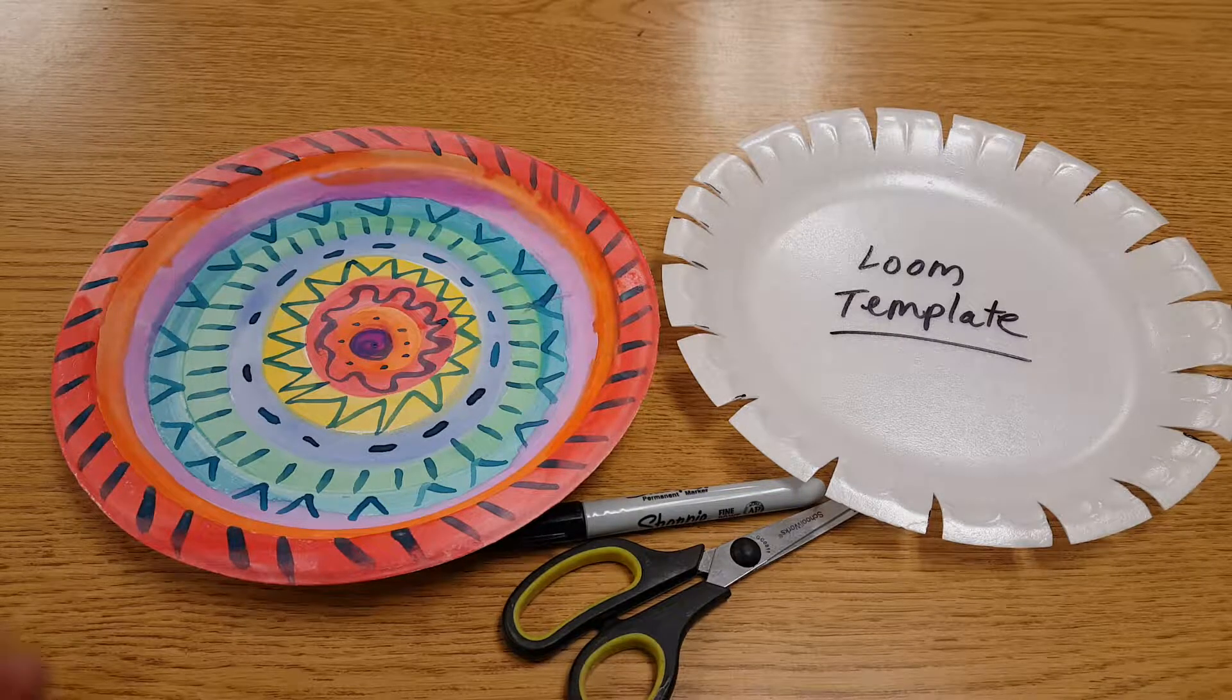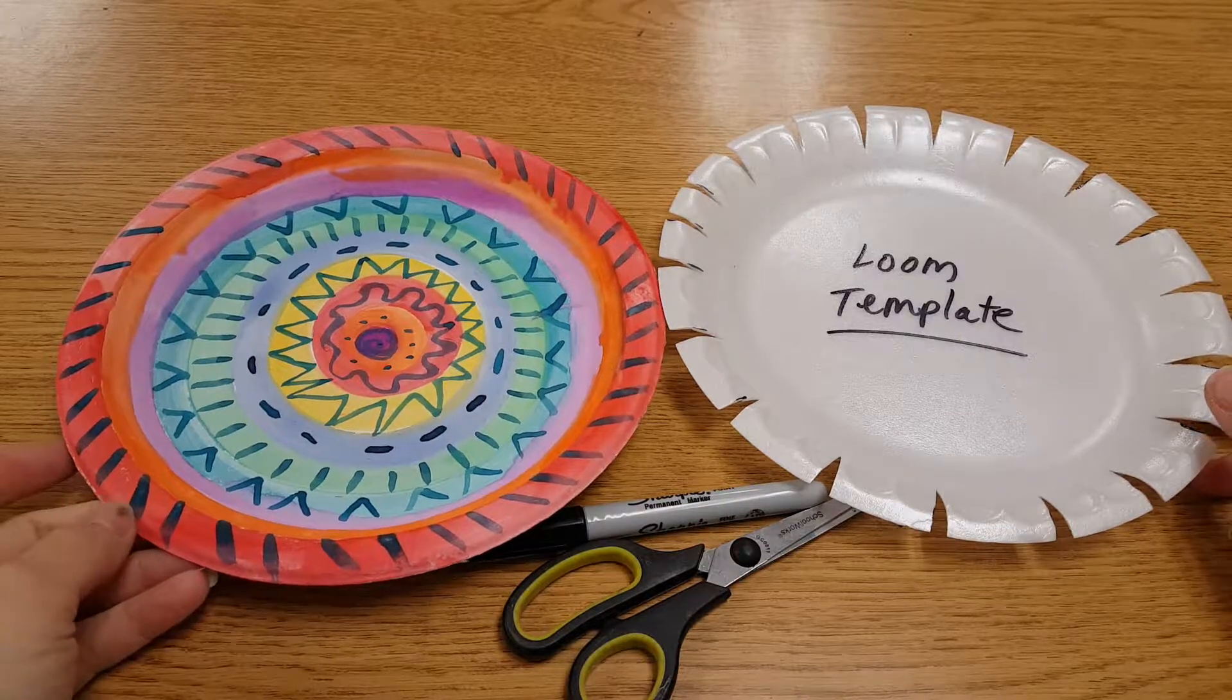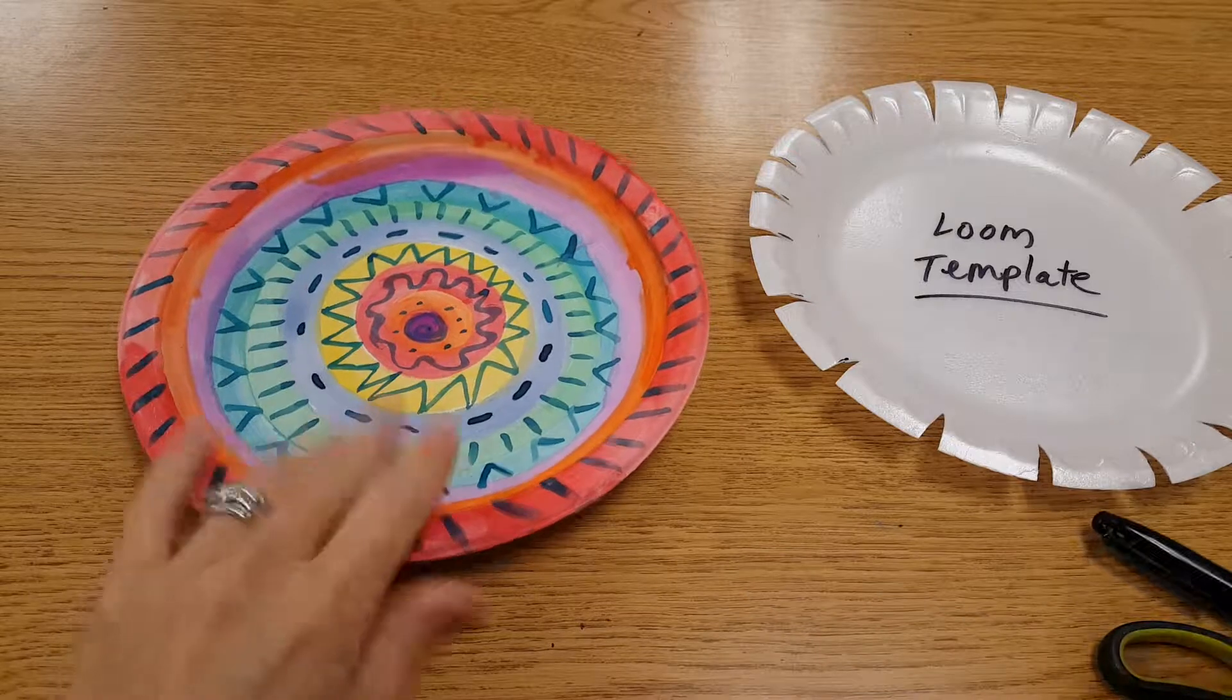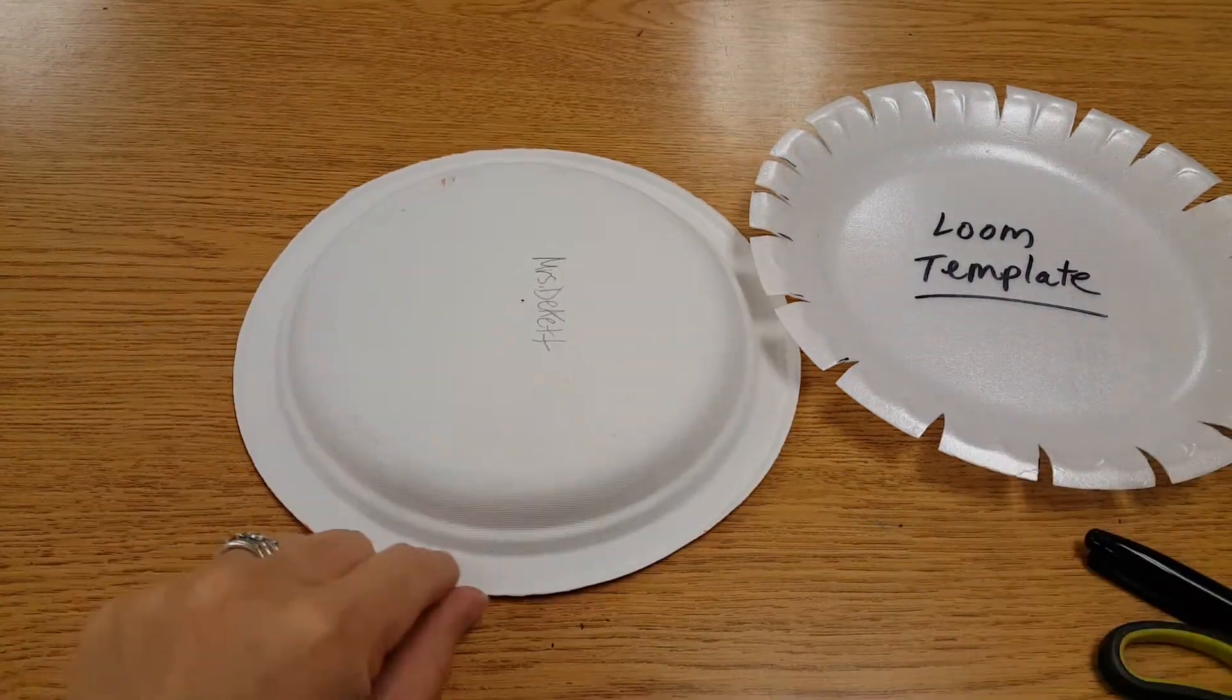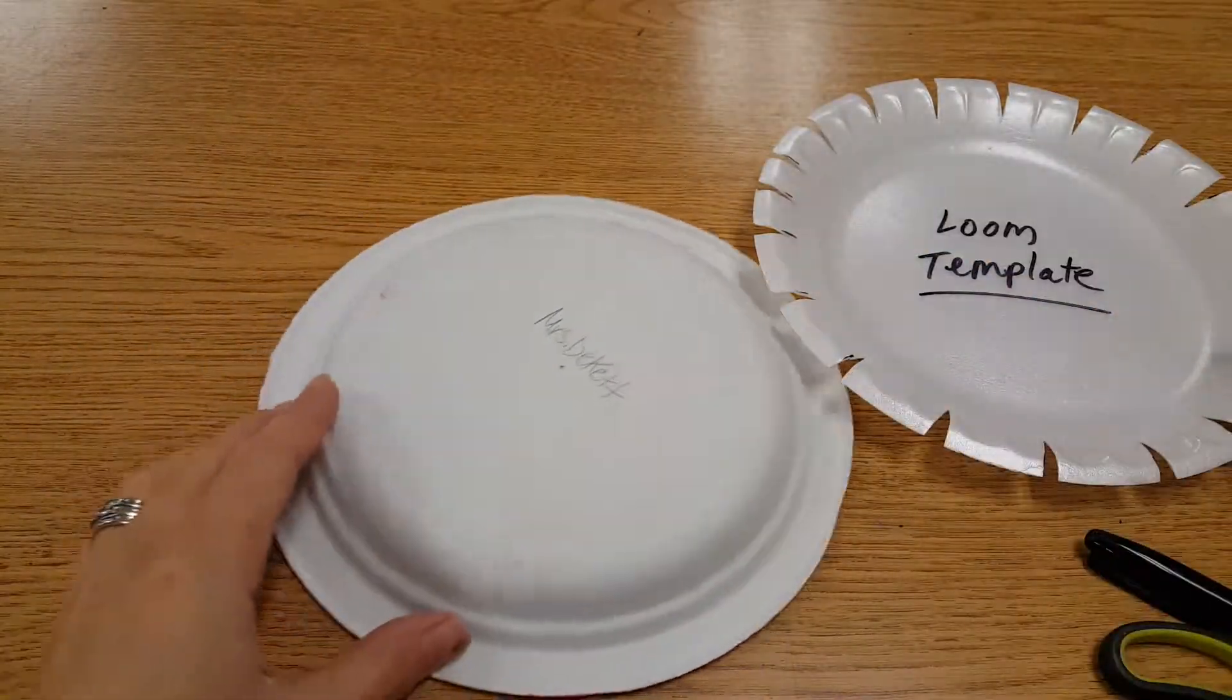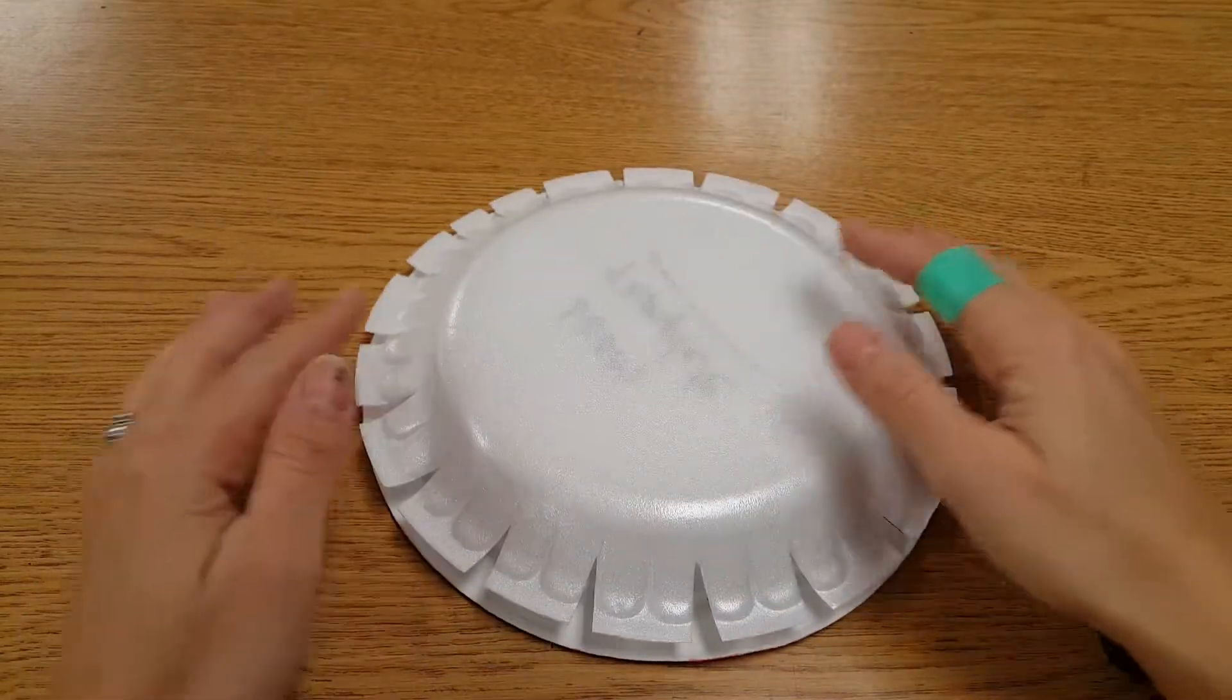Artists, today you need to take your paper plate and use the loom template to get your notches started for your loom. The very first thing you're going to do is turn your plate over so you don't get any sharpie marks on your painted design up front. Turn your plate over and take this loom template and flip it over right on top of your plate.